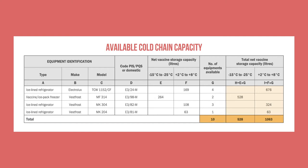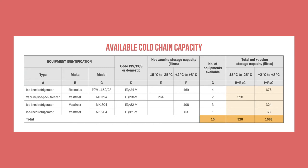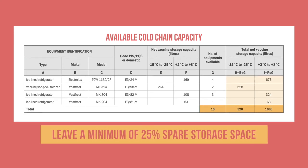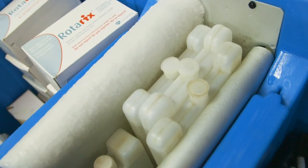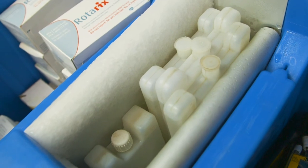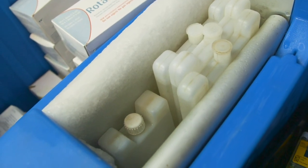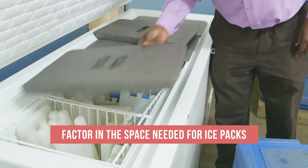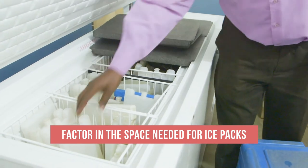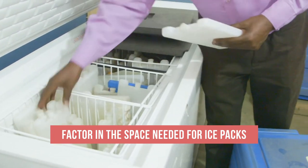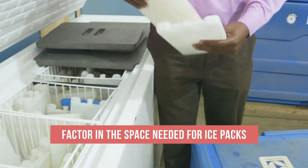Note that when ordering vaccines, make sure to leave spare storage space — a minimum of 25% of your total capacity — to allow for greater flexibility in stocking the vaccines. Also, keep in mind that ice packs take up storage space as well. You will need to perform additional calculations to estimate the number of ice packs required and the space needed to freeze them.